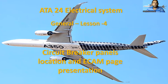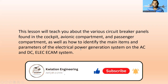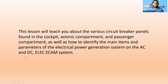Today I'm going to teach ATA Chapter 24 Electrical System, General Lesson Number Four: Circuit Breaker Panels Location and ECAM Page Presentation. This lesson will teach you about the various circuit breaker panels found in the cockpit, avionics compartment, and passenger compartment, as well as how to identify the main items and parameters of the electrical power generation system on the AC and DC ECAM system.